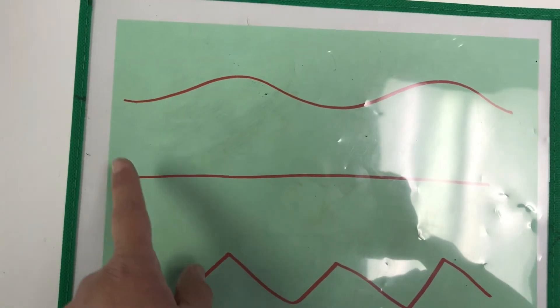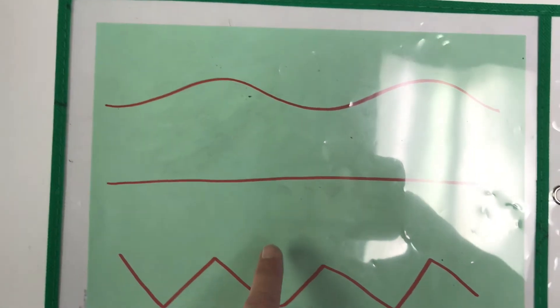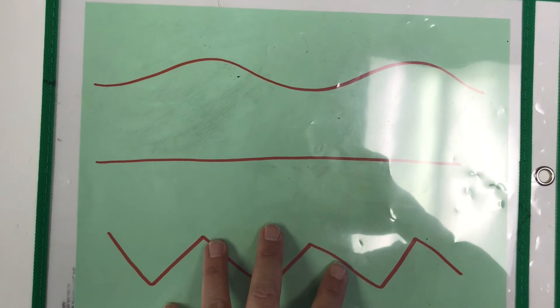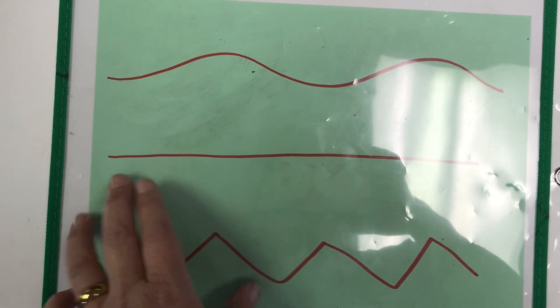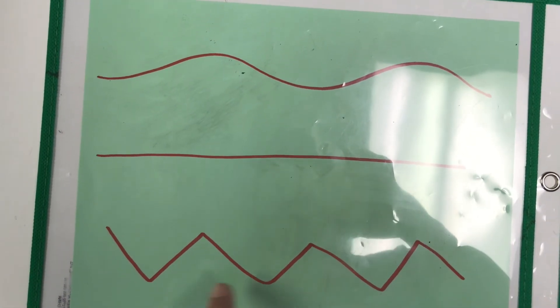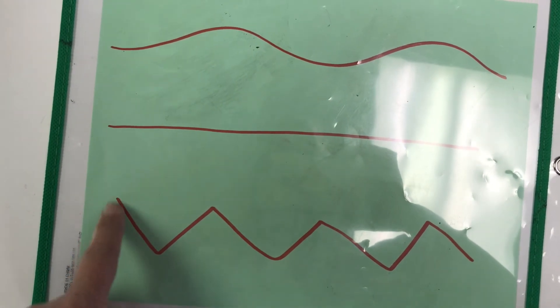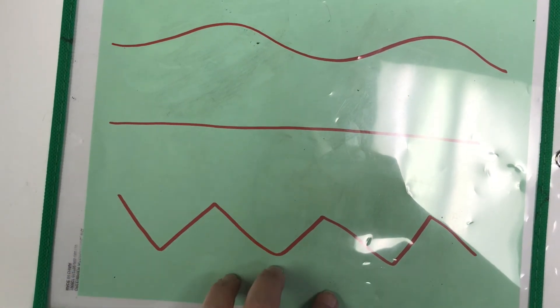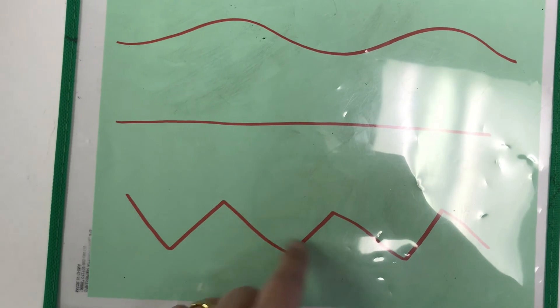Now I would love for you to make these lines appropriate for your child specifically. If your child struggles a little more, make more of a straight line. If they're a little more advanced, do some lines that are a little trickier, maybe do a little tighter squiggle.